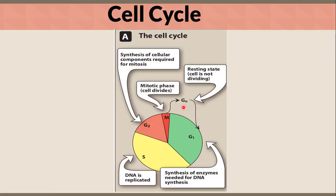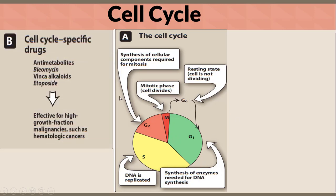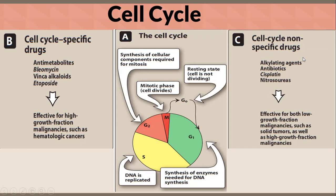The cell cycle starts at G0 resting state — cell is not dividing. Then G1 — synthesis of enzymes needed for DNA synthesis. After that, S-phase — DNA is replicated. Then G2 — synthesis of cellular components required for mitosis. Finally, M — mitotic phase, cell divides, then back to G0. Cell cycle-specific drugs include antimetabolites, bleomycin, vinca alkaloids, and etoposide; they are effective for high-growth fraction malignancies such as hematologic cancers. Cell cycle non-specific drugs such as alkylating agents, antibiotics, cisplatin, and nitrosoureas are effective for both low-growth fraction malignancies such as solid tumors, as well as high-growth fraction malignancies.